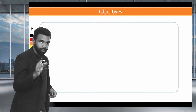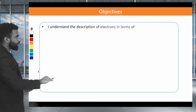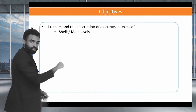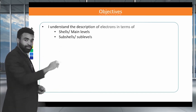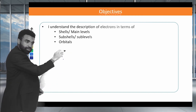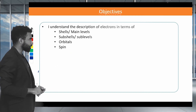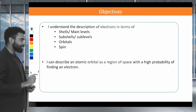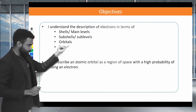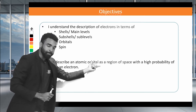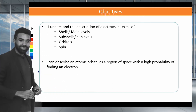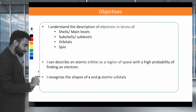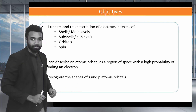The objectives of this video are the following. We'd like to understand the description of electrons in terms of four things: the main levels, also known as the shells; the sublevels or subshells; the orbitals; and finally the spin of an electron. Secondly, we'd like to understand the description of an orbital. We'd like to be able to describe an atomic orbital as a region of space with a high probability of finding an electron. Lastly, you'd need to understand and recognize the shapes of S and P atomic orbitals.